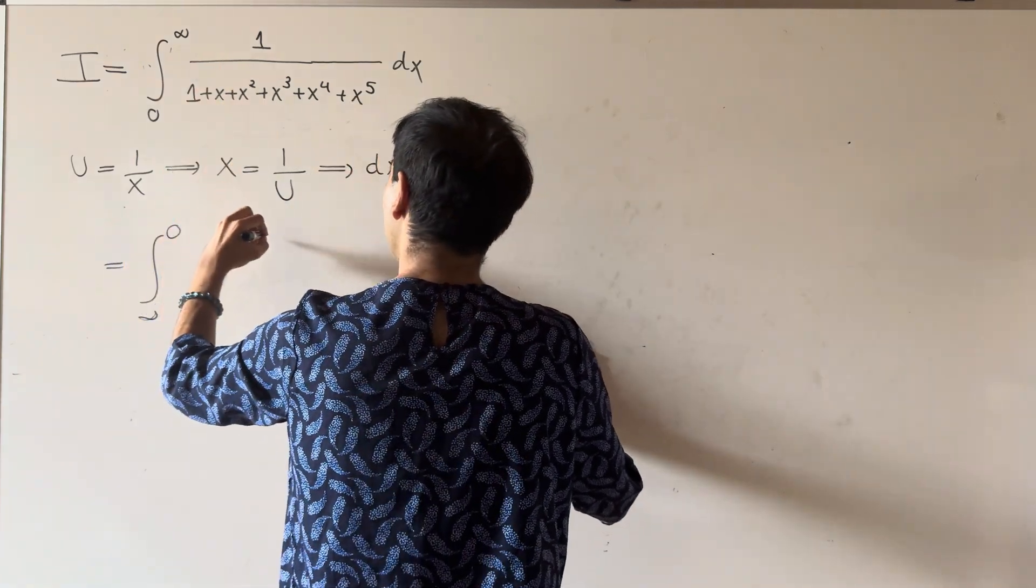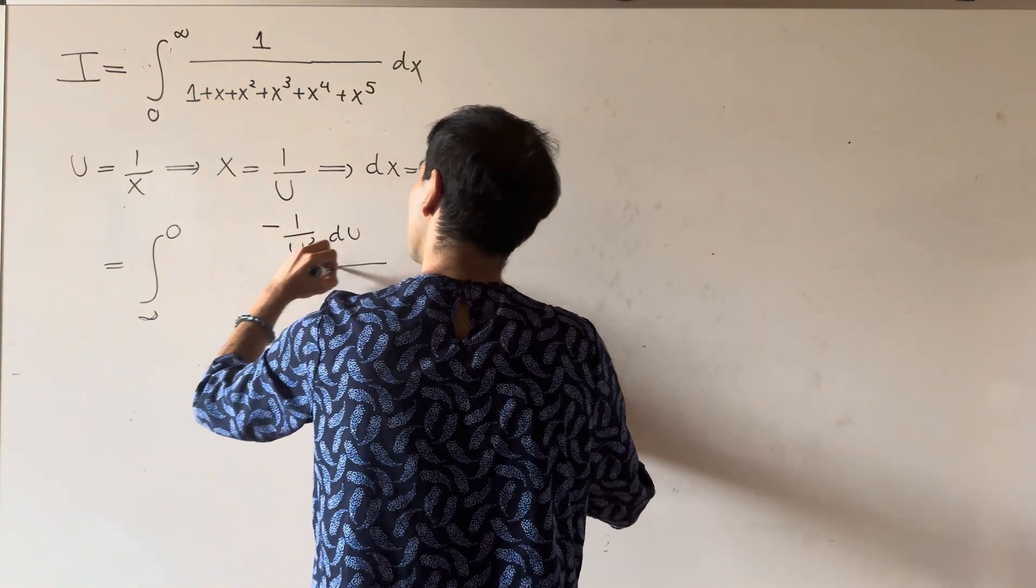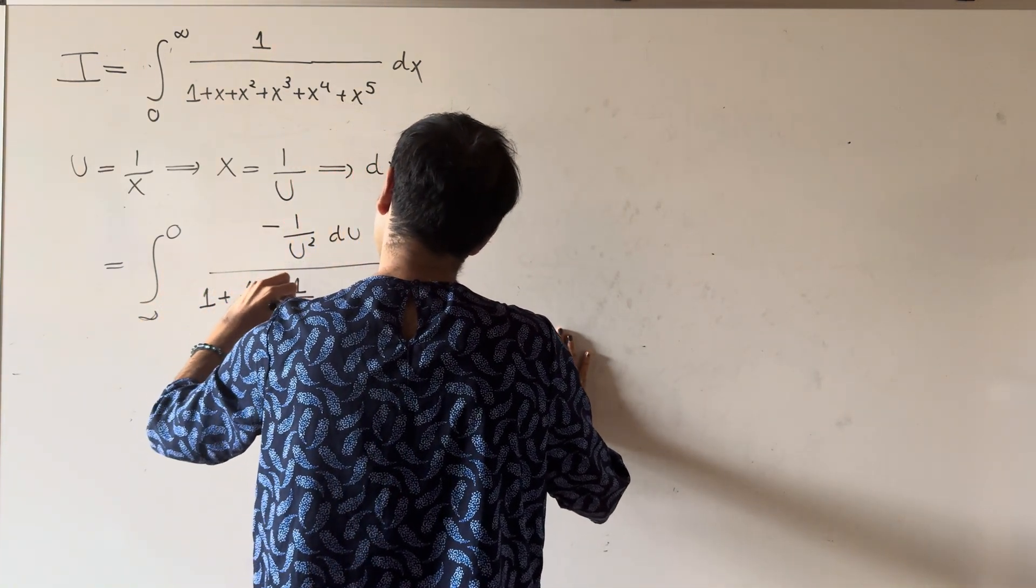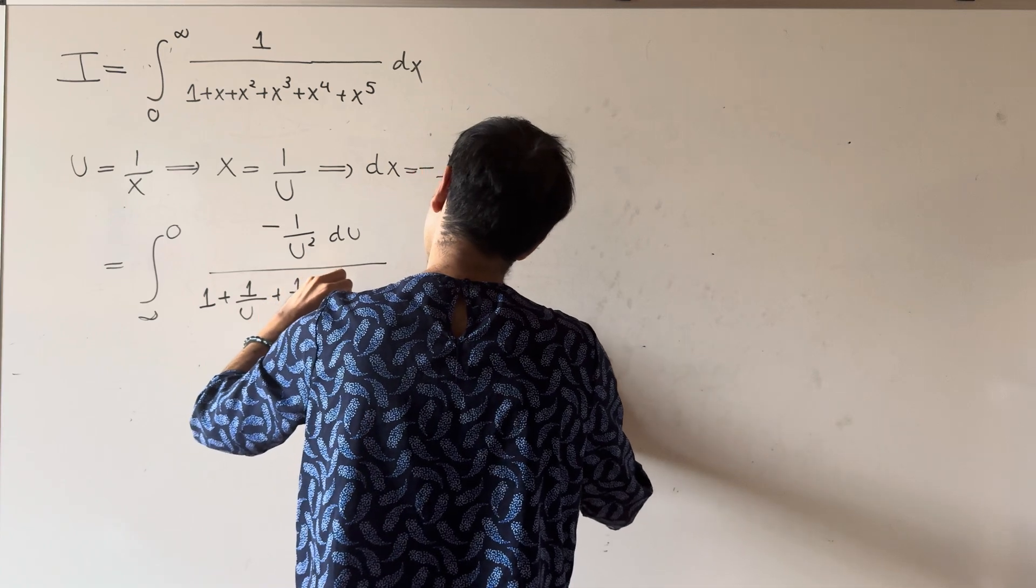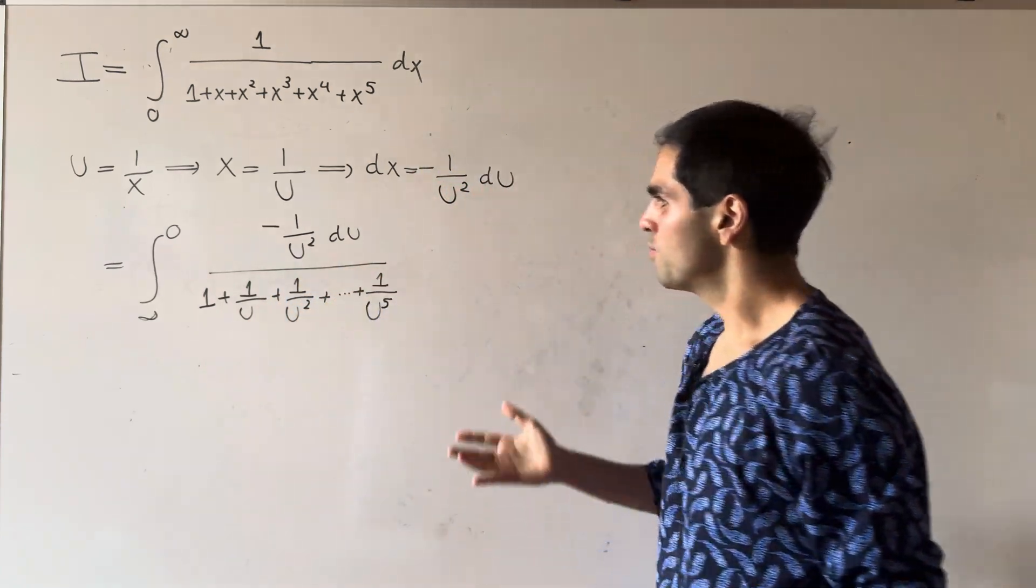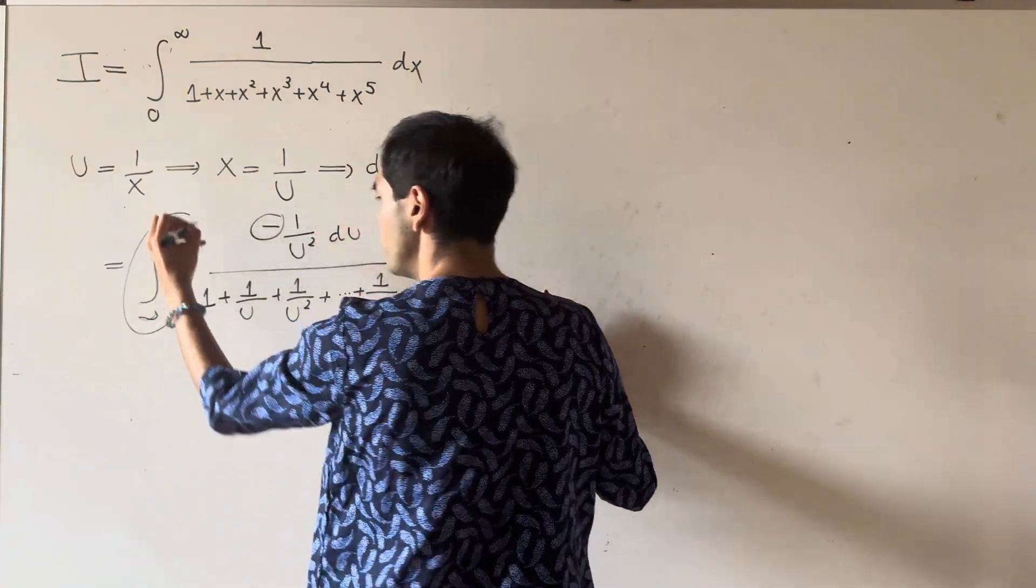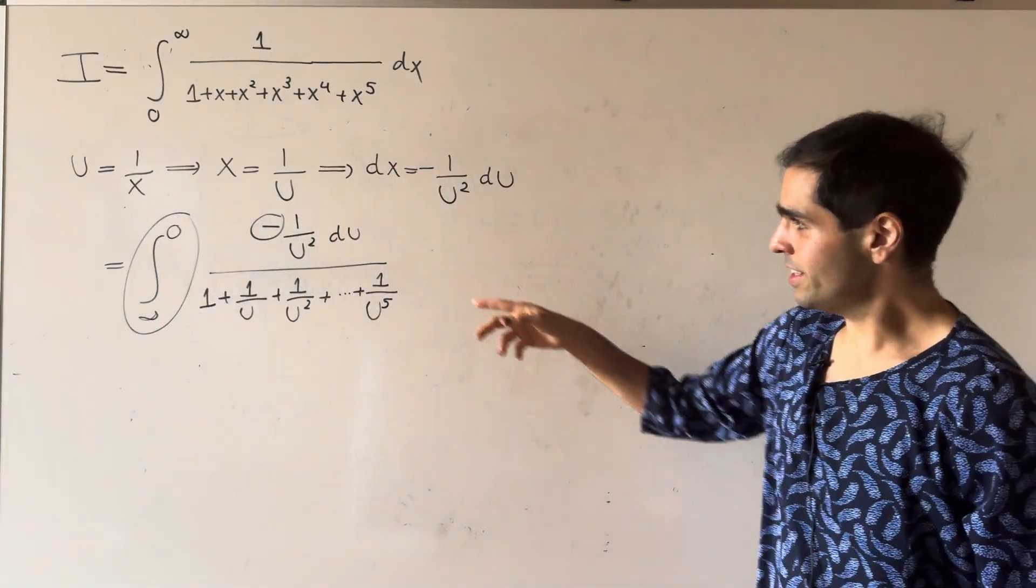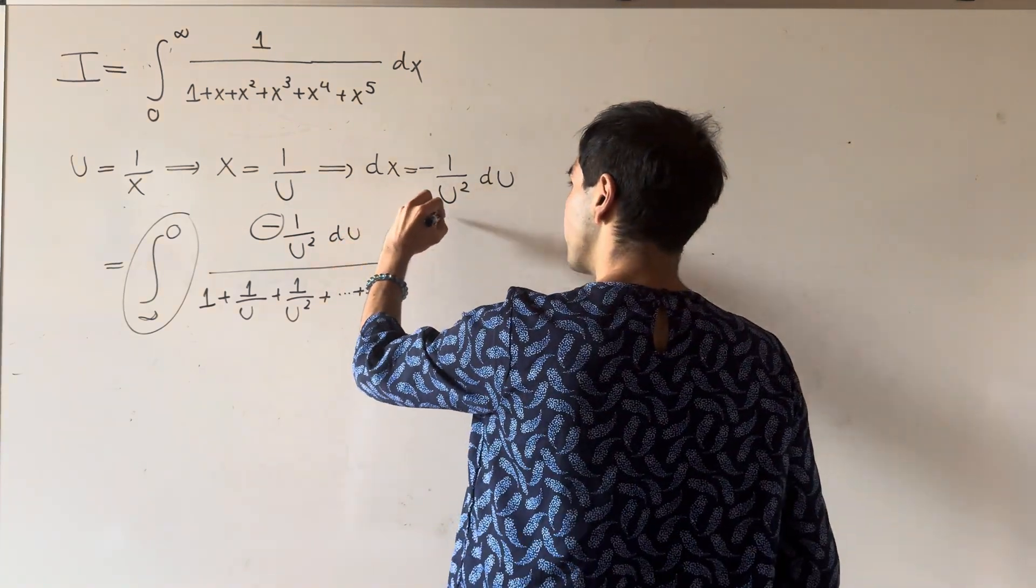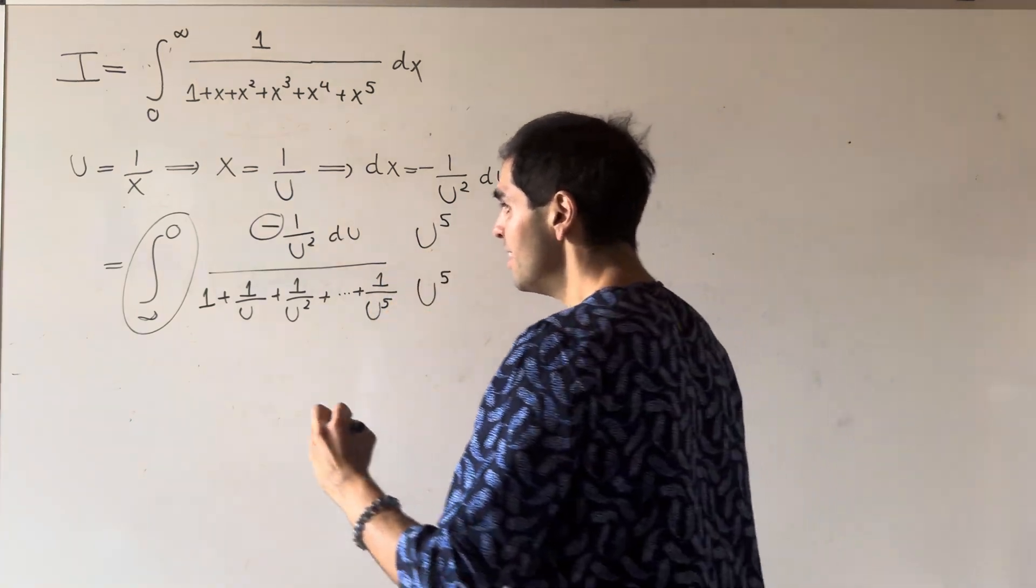and then minus 1 over u squared du over 1 plus 1 over u plus 1 over u squared up to 1 over u to the fifth. Let's clean this up a little bit. This minus will reverse the order of integration. Moreover, to avoid those fractions, let's multiply both sides by u to the 5th.